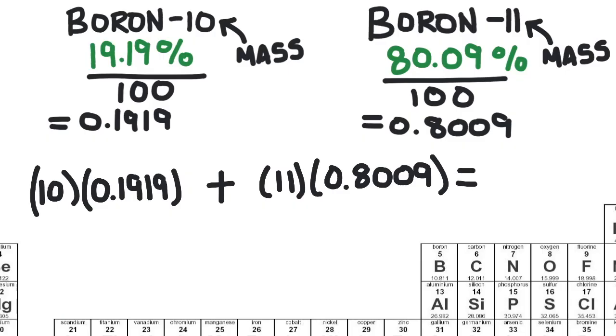So for boron, we end up with 10.81, and here is that number on the periodic table. That's how you calculate the atomic weight of an element.